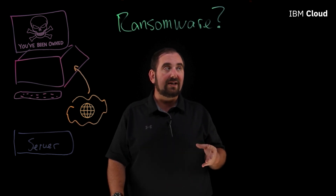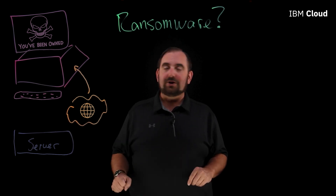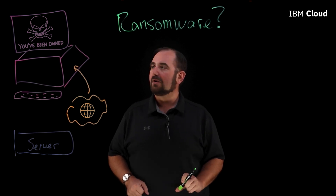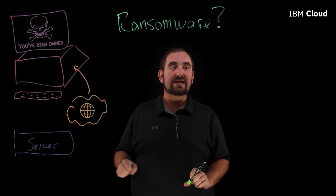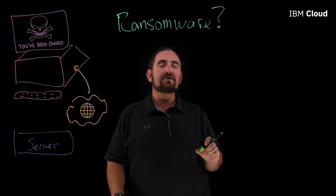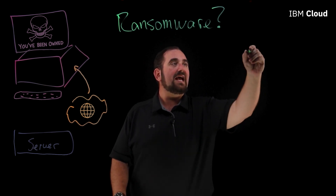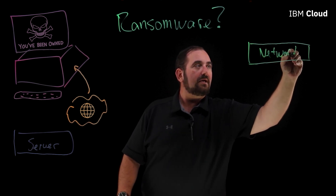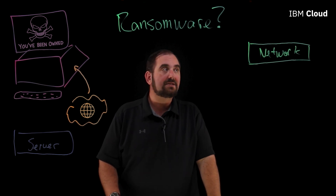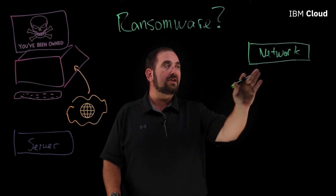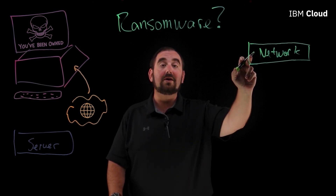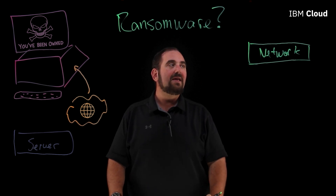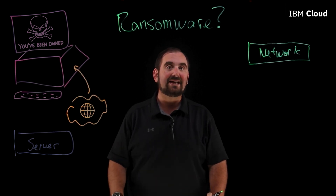Now there are ways to avoid it. In order to keep those malicious actors from getting access to your system, the first and most important thing you can do is have good network policies. This includes both your home network and any kind of enterprise or commercial network. If your network is properly set up and configured, and if you are regularly installing all of the patches and firmware upgrades to keep your network equipment running safely, that is your first line of defense against any kind of malicious actor getting into your machine.